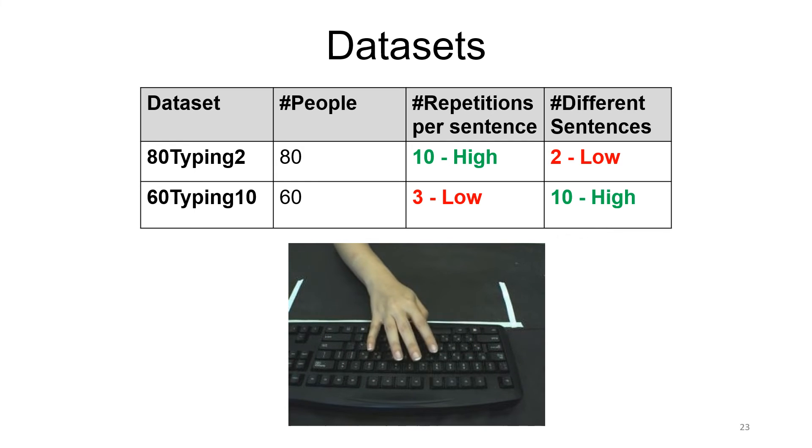The second dataset, named 60Typing10, contains 60 persons typed 10 sentences three times. This dataset aimed for classification on new unseen sentences.